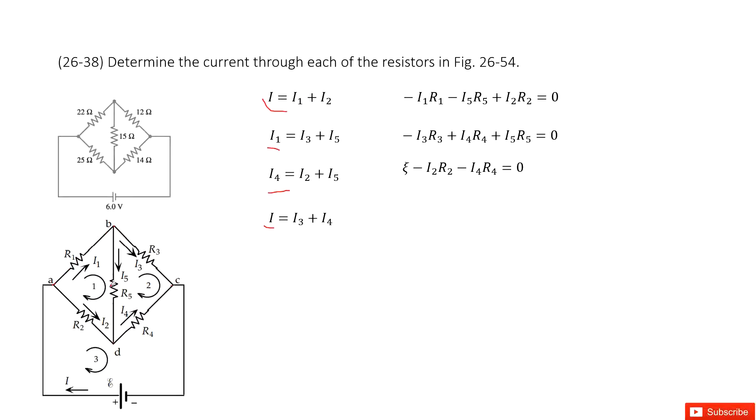Then the current goes through R5, so voltage decreases, so minus I5 R5, and then goes back to R2. There you can see the loop's direction is opposite with the current's direction. So we need to add it up. The voltage increases, so add I2 times R2 equal to zero.